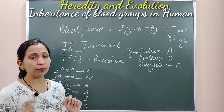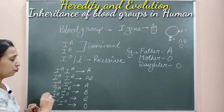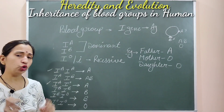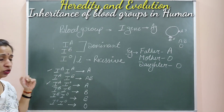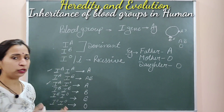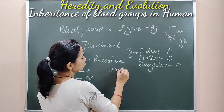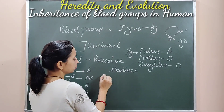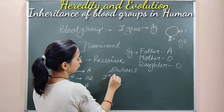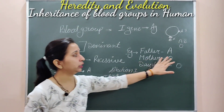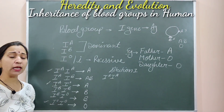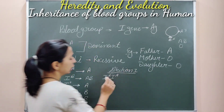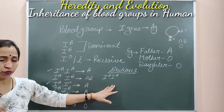Father has A blood group, so there are two possibilities: homozygous (Ia-Ia) or heterozygous (Ia-Io). We will discuss this in two situations. In situation one, the father's genotype is Ia-Ia (homozygous dominant). The mother's blood group is O, which can only be Io-Io (homozygous recessive) — so there is no confusion there.